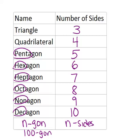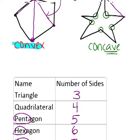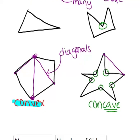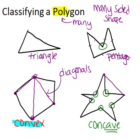Let's go back to the original four polygons and name them. This first one has three sides, so it's a triangle. Moving to the right, there are five sides, so it's a pentagon — specifically, it's a concave pentagon.